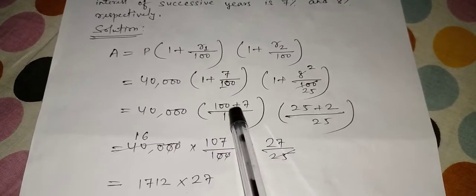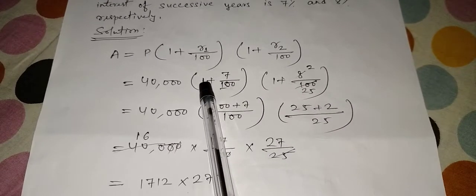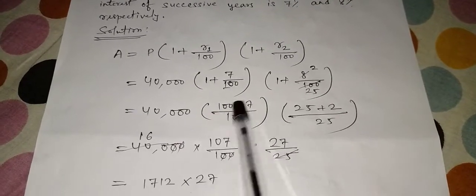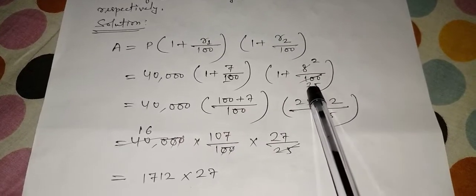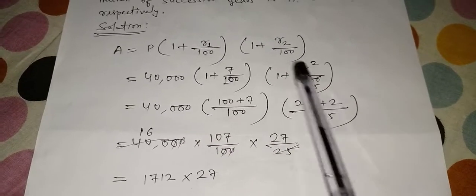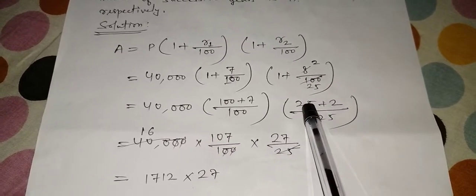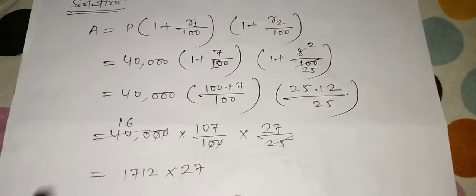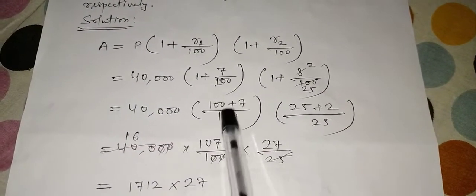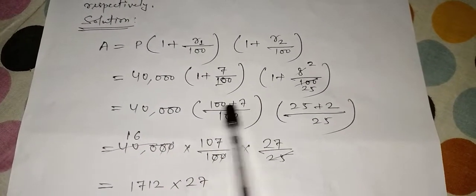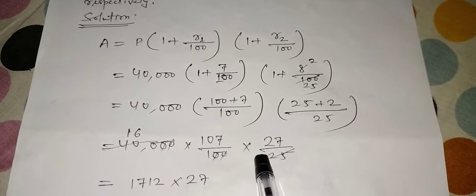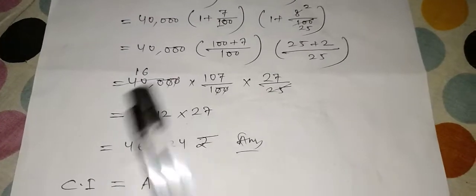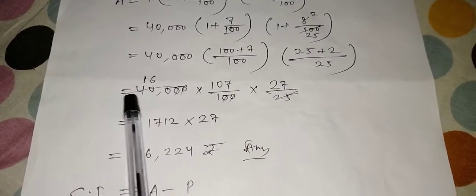As below 1 there is 1 and here is 100. LCM of 1 and 100 is 100. So this 100 goes and multiplies with 1. 100 ones are 100 comes here, and this 7 remains same: 100 + 7 / 100. And here 25 is LCM. 25 multiplies with 1, 25 ones are 25, and this 2 remains same. Now 40,000 × 107/100.